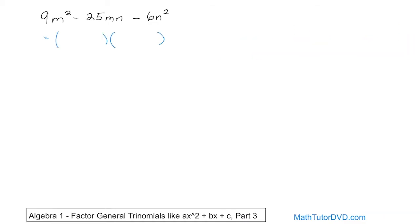What times what gives you 9? The first thing that pops in my mind is 3 times 3. You don't really know what the answer is going to be, so you have to start somewhere. So this will be 3m, and this will be 3m.